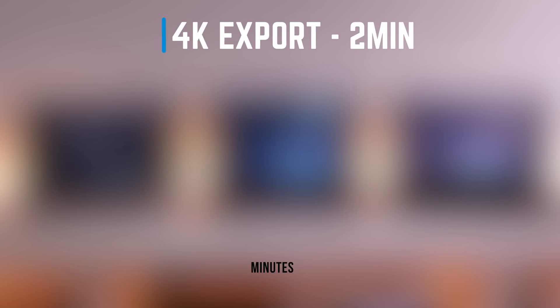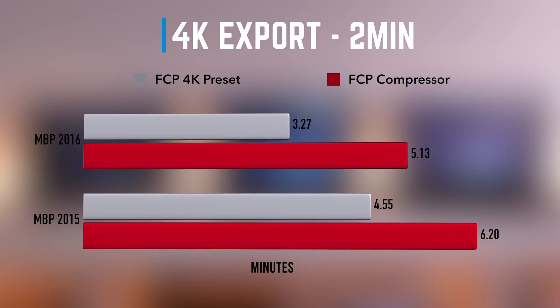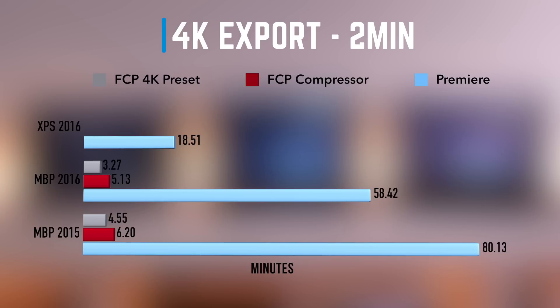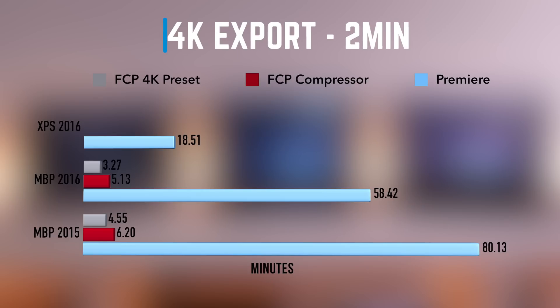The 2015 MacBook Pro did the export from Final Cut in 4 minutes 55 seconds, and via Compressor in 6 minutes 20. The 2016 MacBook Pro did the export from Final Cut in 3 minutes 27, and 5 minutes 13 through Compressor. Comparing those export times — with background rendering turned off — there is a massive difference in export times between Final Cut and Adobe Premiere. These results are pretty interesting. I can't believe there's such a huge difference exporting from Final Cut, or even exporting from Final Cut via Compressor, versus exporting what is essentially the same timeline in Adobe Premiere, even on the same systems.